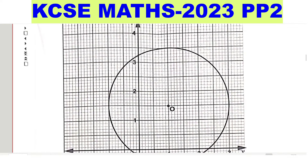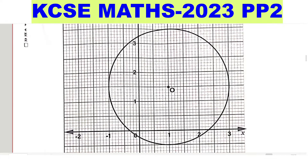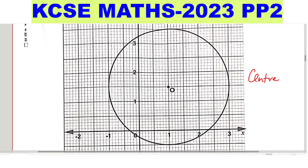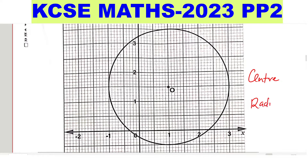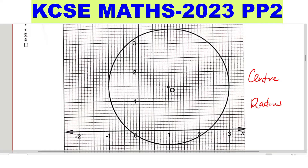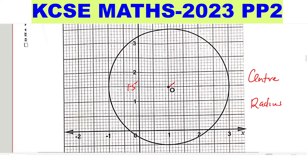So look at this circle. For us to get the equation of the circle, we need to have the center and the radius. How do we identify the center? The center is O, and we just need to give the coordinates of the center. The coordinates will be 1, 1.5 — this is 1.5 here and this is 1. So the coordinates are 1, 1.5. That is the center.